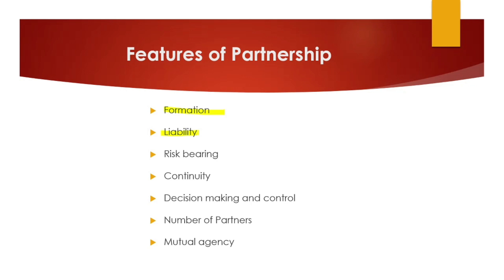The next feature is liability. The liability of the partnership form of business is unlimited — partners even have to use their personal assets to pay off the firm's debts. Next is risk bearing — just as profit is shared among all partners, risk is also shared among all partners.